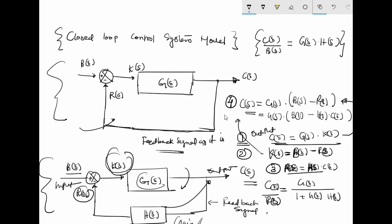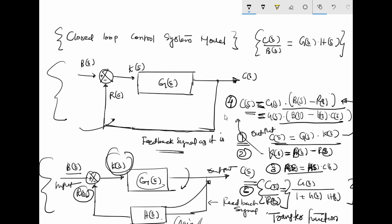So C(s) equals G(s) times [B(s) minus R(s)]. Substituting R(s) equals H(s) times C(s) and simplifying, you arrive at the final transfer function: C(s) upon B(s) equals G(s) divided by [1 plus G(s) times H(s)]. This is the final solution of output upon input, which is called the transfer function of the whole circuit.